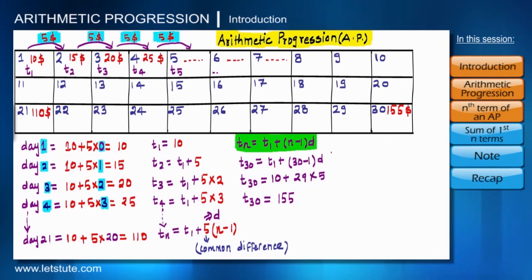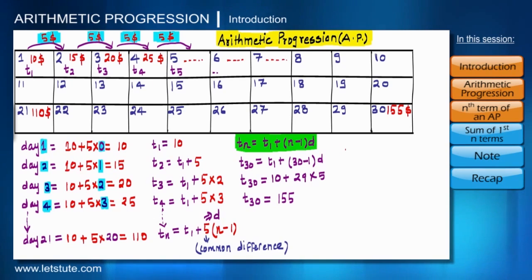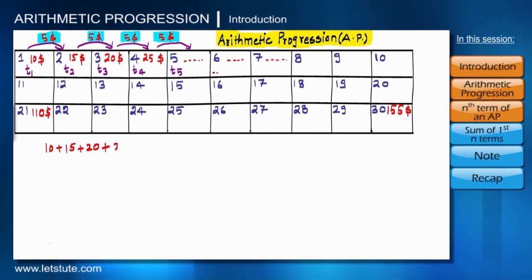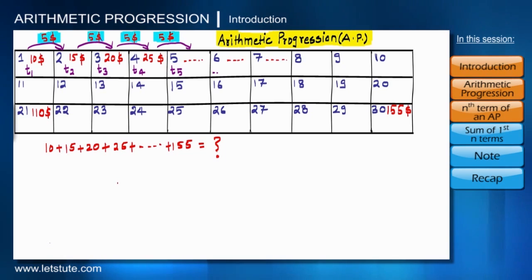Now let's go to the next step and find the total revenue from this project — the summation of all 30 payments. We want to add: 10 + 15 + 20 + 25 + … + 155. A similar question was asked to a boy in school: what is the sum of the first 10 counting numbers?